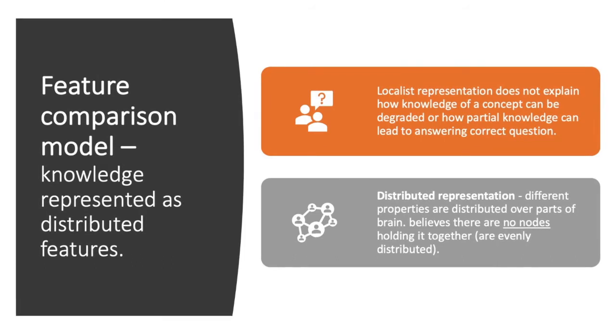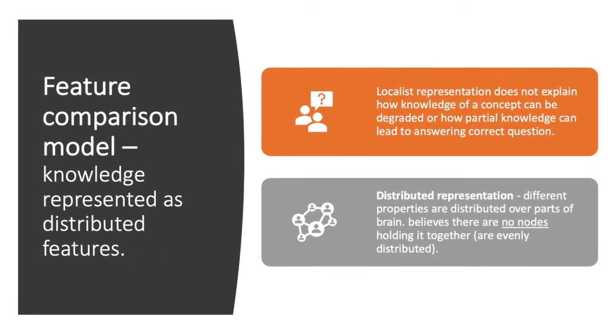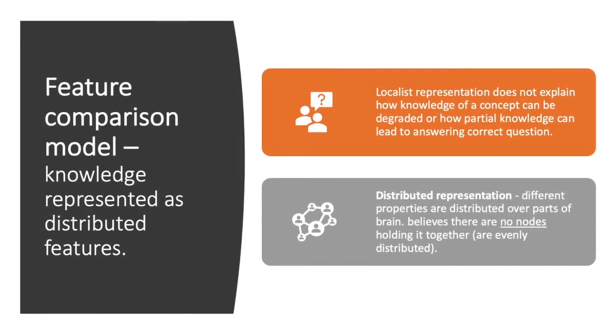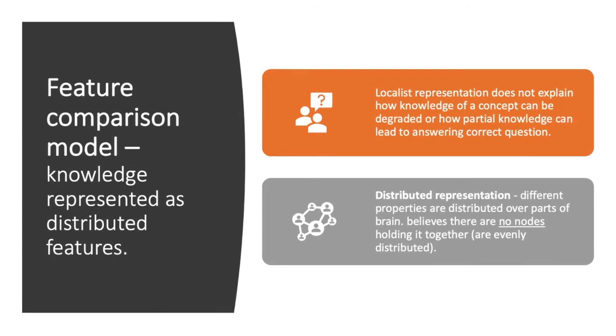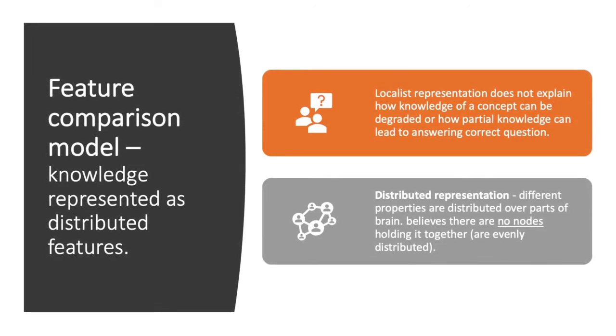Thus, this led to the development of distributed representations, whereby different properties are distributed over parts of the brain, and it was believed that there were no nodes holding it together, in that they were just evenly distributed.